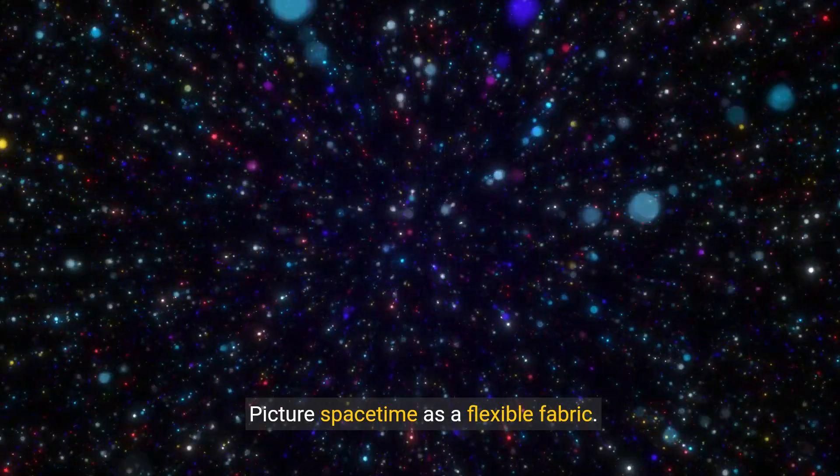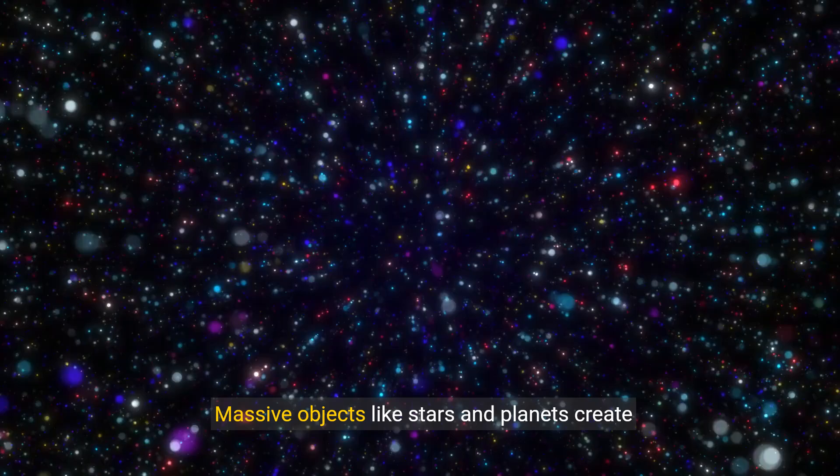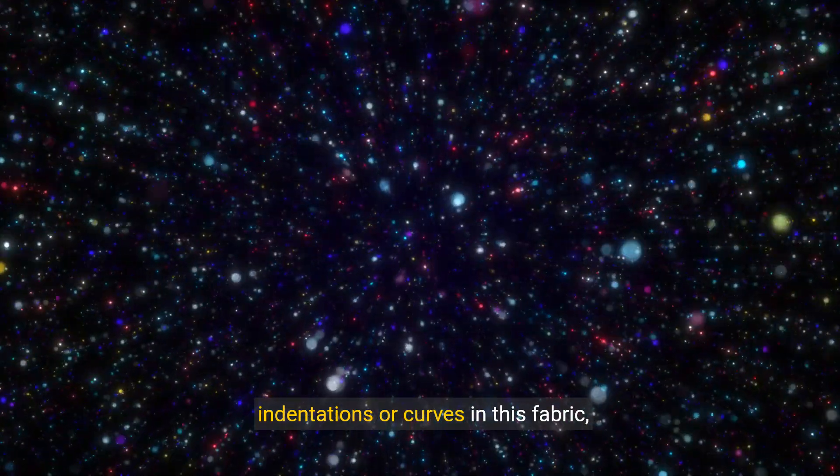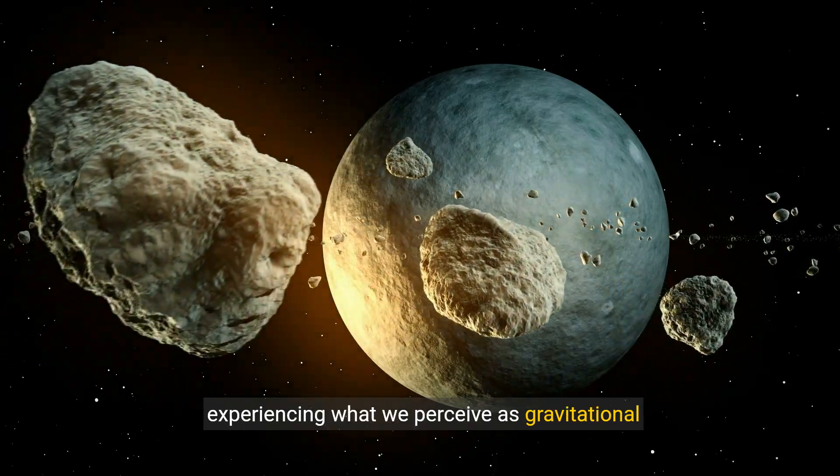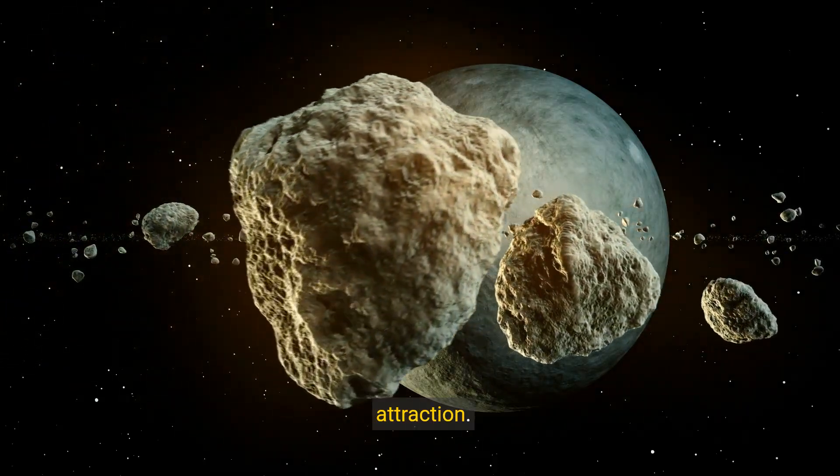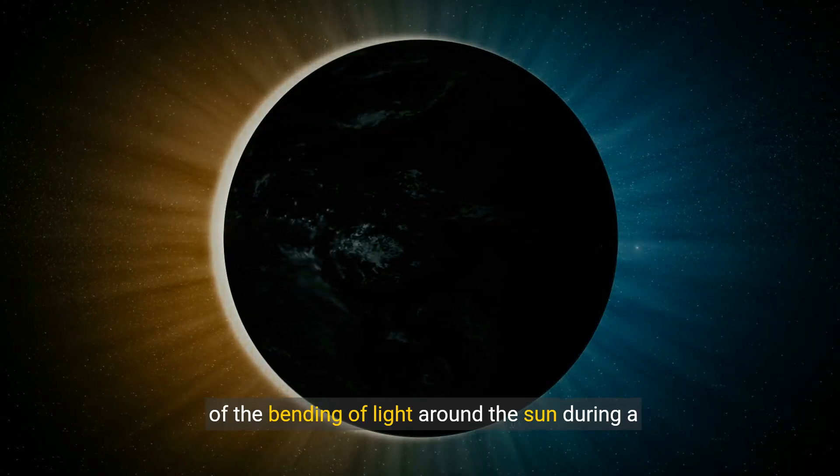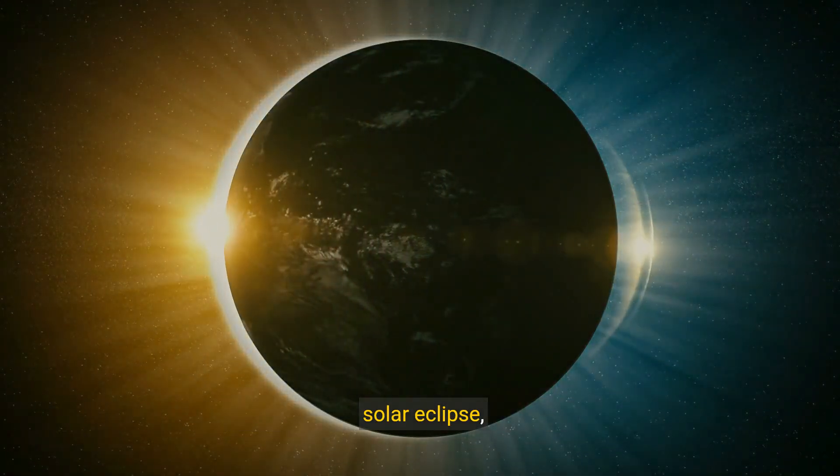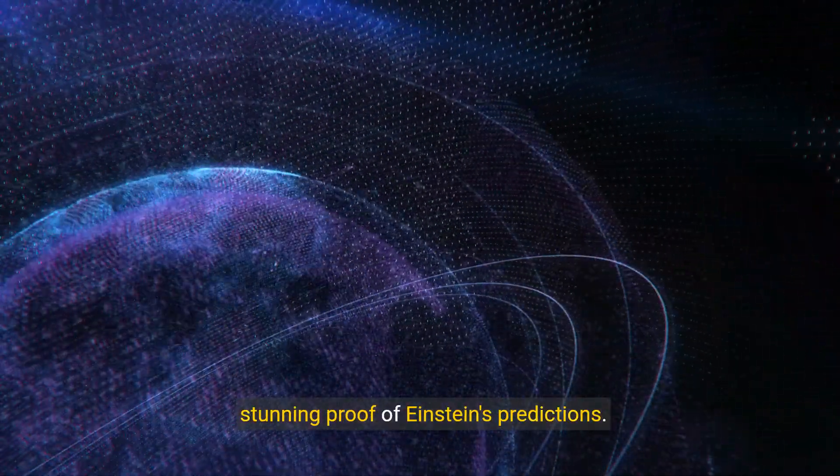Picture spacetime as a flexible fabric. Massive objects like stars and planets create indentations or curves in this fabric, and other objects move along these curves, experiencing what we perceive as gravitational attraction. One pivotal confirmation of this was the observation of the bending of light around the sun during a solar eclipse, known as gravitational lensing, which offered stunning proof of Einstein's predictions.